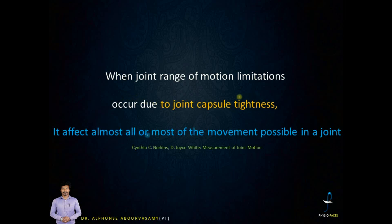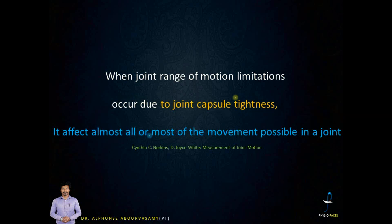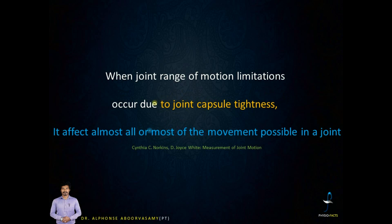For example, in the shoulder, if the shoulder capsule gets tighter, it leads to external rotation being the most affected, abduction moderately affected, and internal rotation less affected. We call this a pattern of movement restriction — a predictable pattern — in the sense that it can always be predicted. If the shoulder joint capsule is involved, it will always present this way, and the same applies to other joints.